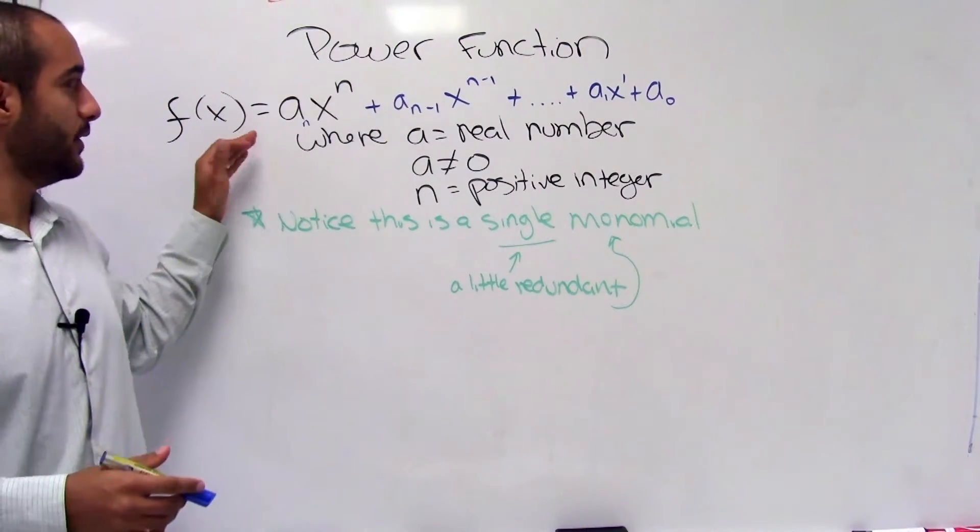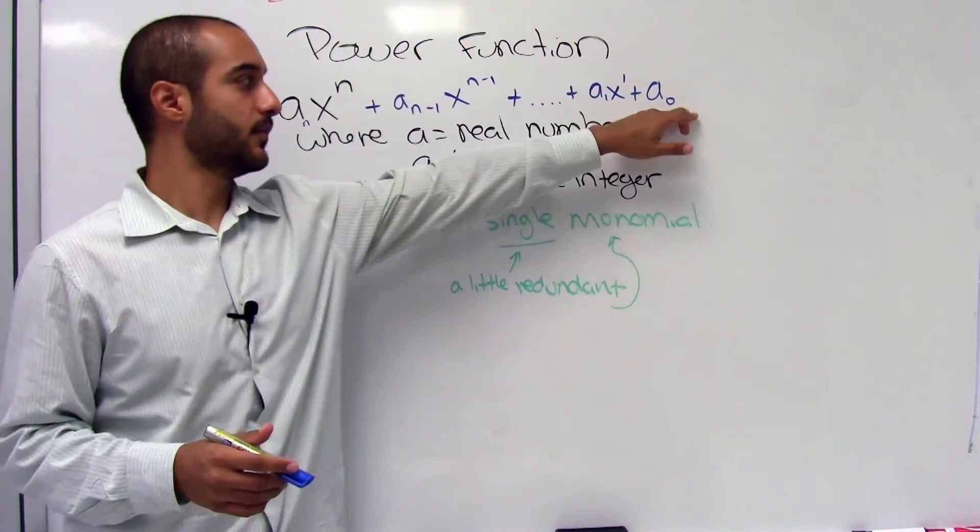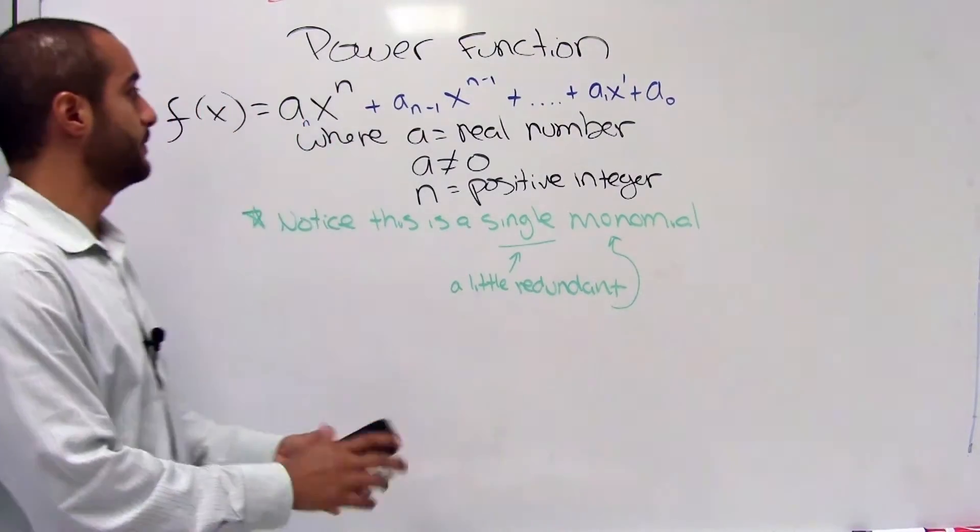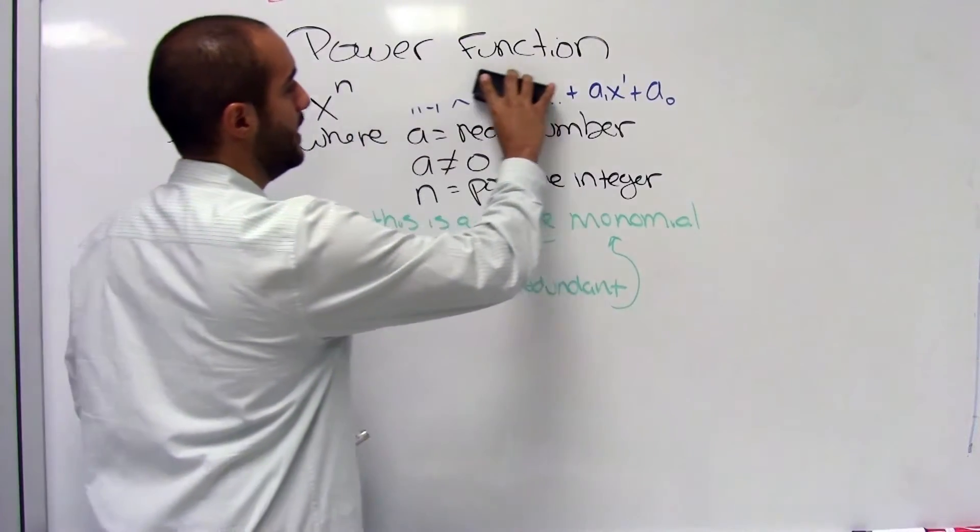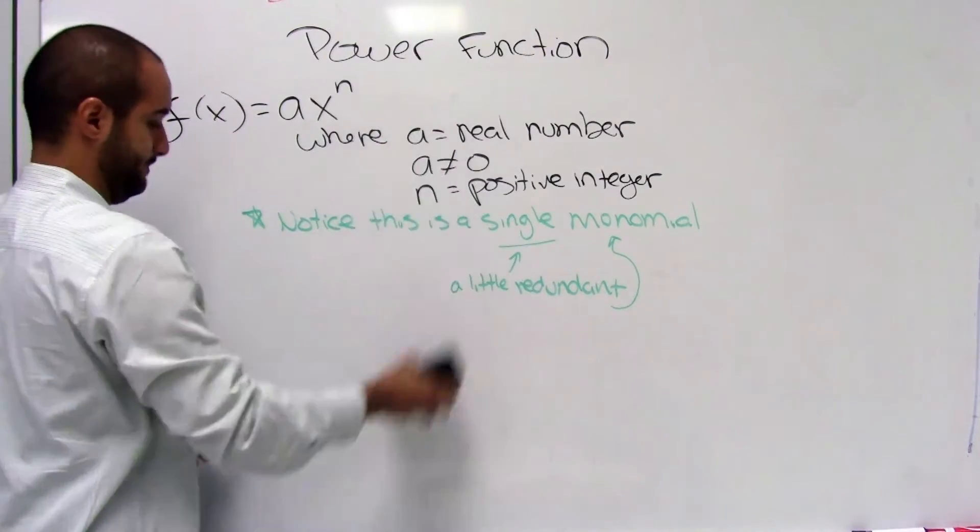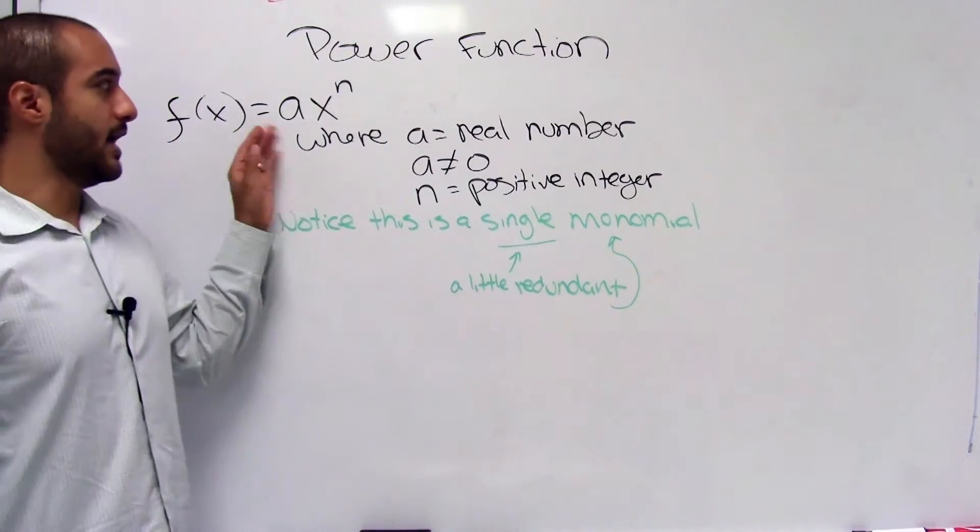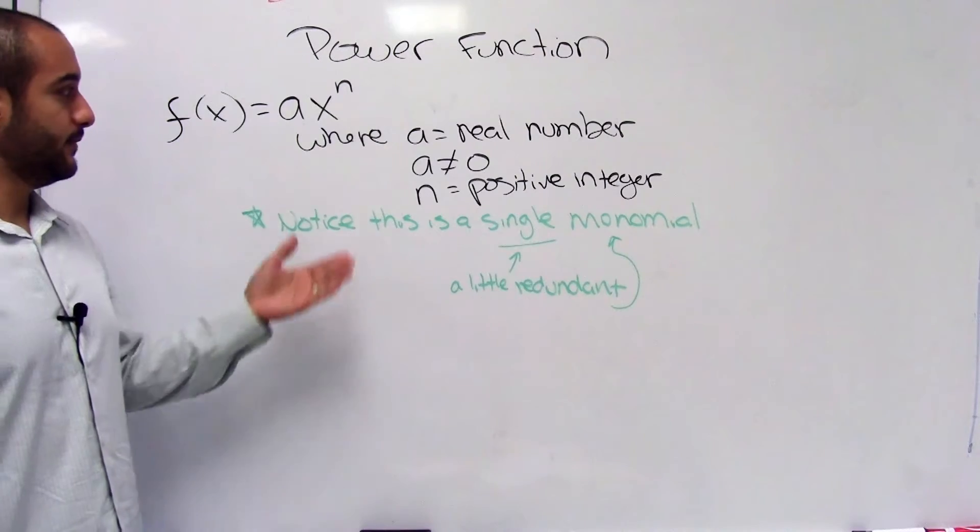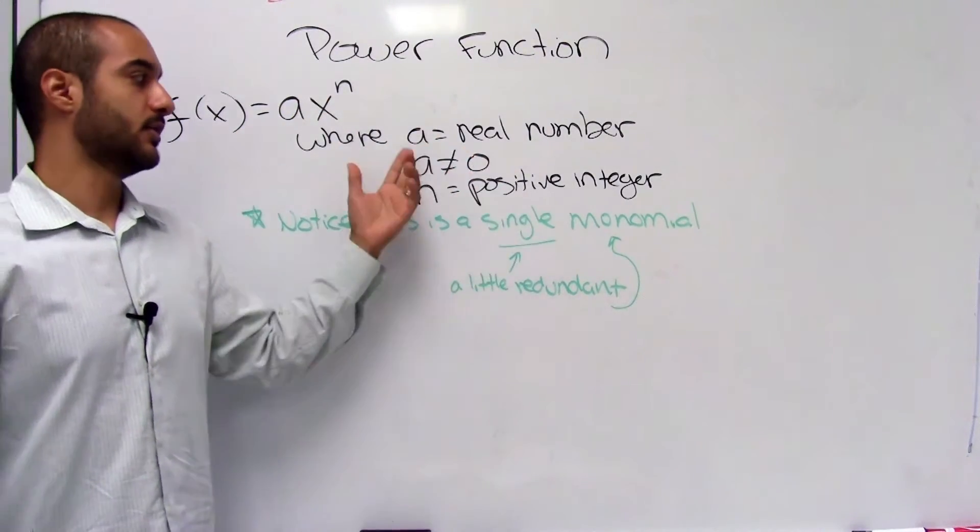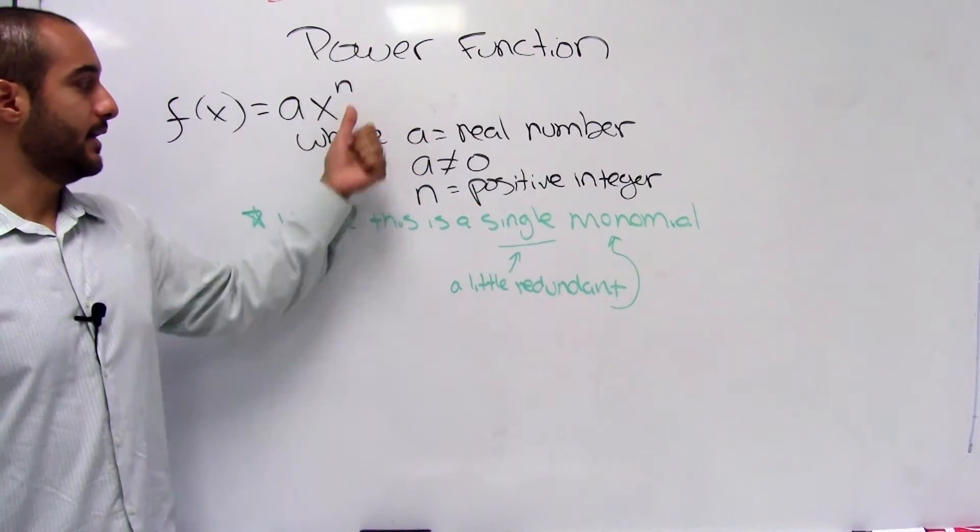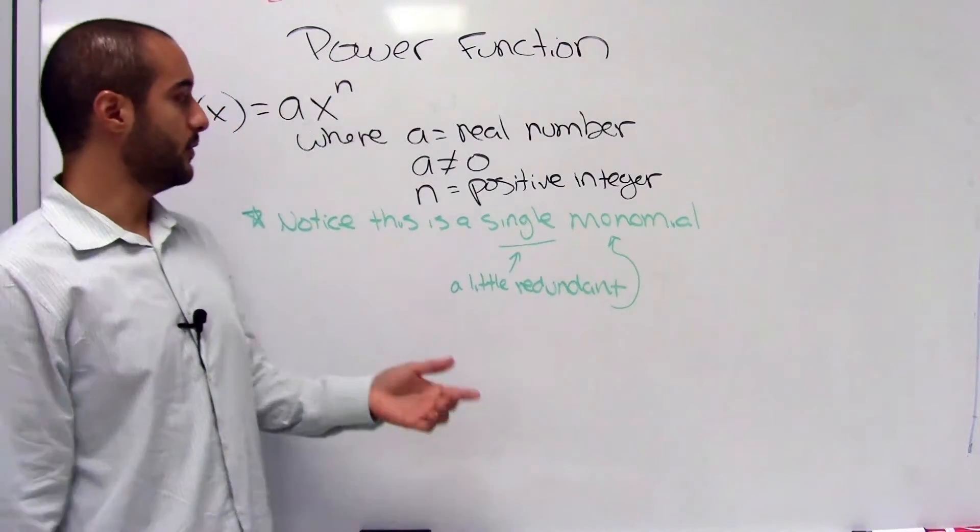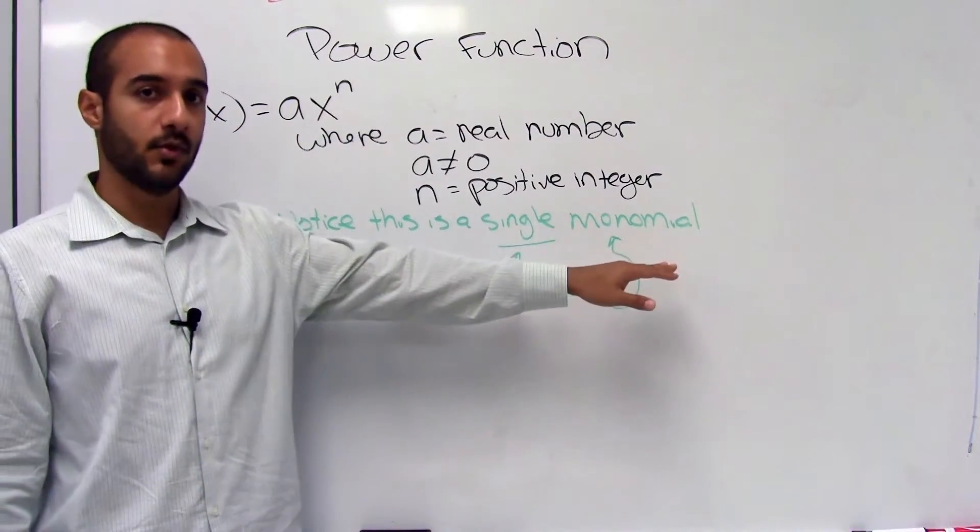Alright, so if we look at the polynomials earlier that we had and we take away all these things in blue, take this away and everything else and we only look at a monomial, one term of it, we have what's called a power function. So here, the power function is made out of ax to the n, where a is a real number, it's not zero, and n is a positive integer. So the same requirements for the polynomial, except that here it's made out of a single monomial.